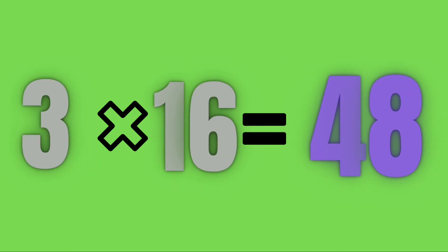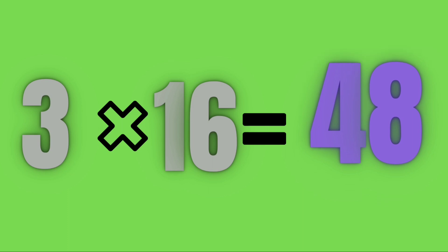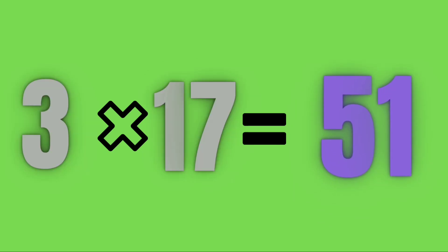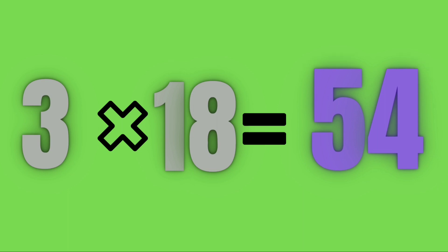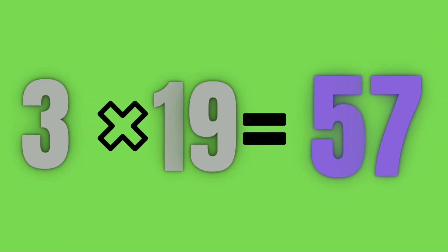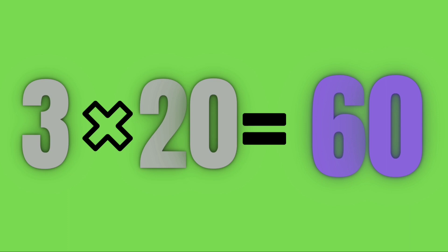Three sixteens are forty-eight. Three seventeens are fifty-one. Three twenties are sixty.